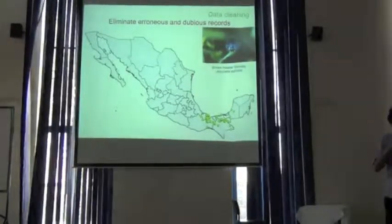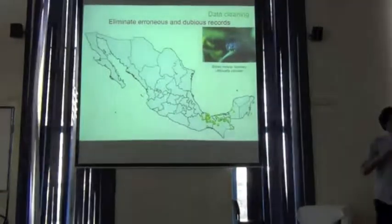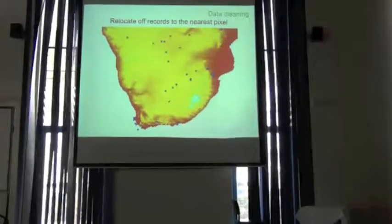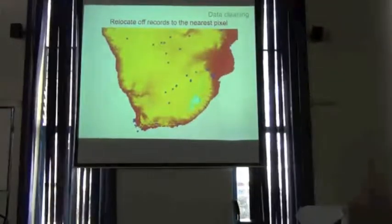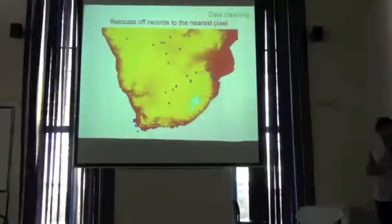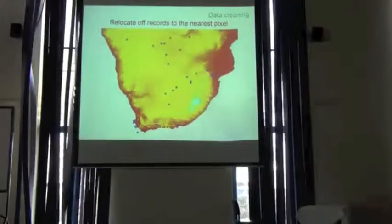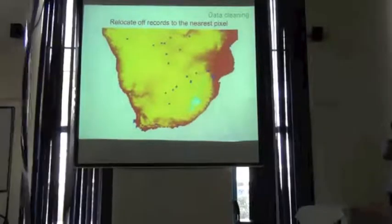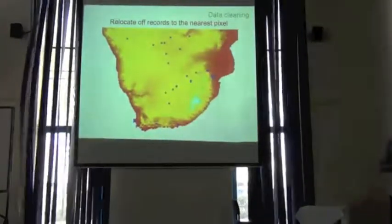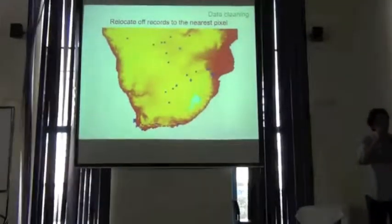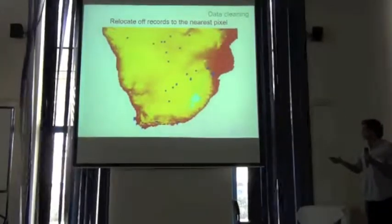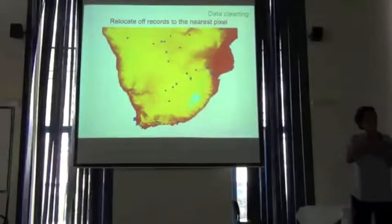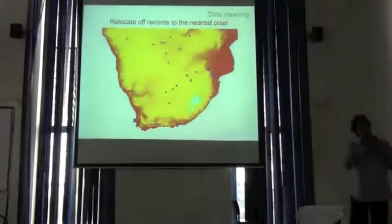This type of error can produce unreliable results in the model. When you have records that plot in the ocean on the map but you know the position is right, for the purpose of modeling it is valid to relocate these points to the nearest pixel. It's a minor adjustment, because we are departing from the original position of the point, but we are certain that this point belongs to the land conditions shown in the map. Under such conditions, it's valid to relocate points.